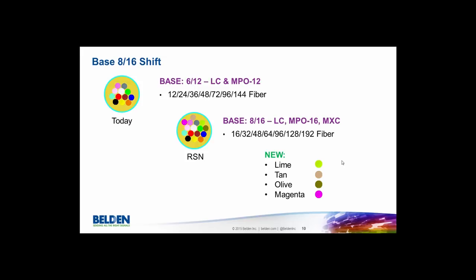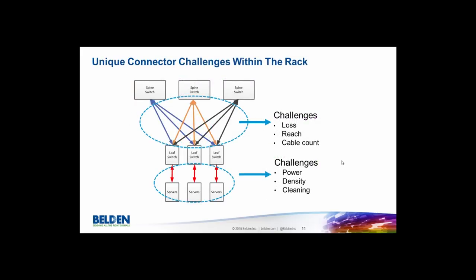What's coming is called the base-8/16 shift. Today everything is based on 6 and 12, but we're moving to 8 and 16 in the next couple of years. You'll start to see different fiber counts in cables, and four new colors introduced inside cables to cover those extra fibers — fibers 13, 14, 15, and 16. Lime, tan, olive, and magenta will be introduced as standard colors to help align this new connectivity paradigm.